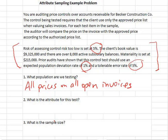What's the attribute that we're testing? The price is from the authorized price list.